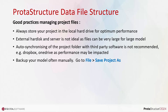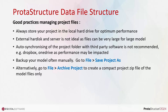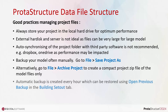Backup your model often manually. Go to File > Save Project As and simply save it as another name. Alternatively, go to File > Archive Project to create a compact project zip file of the model files only. Automatic backup is also created every hour, which can be restored using the Open Previous Backup function in the Building Set Out tab.